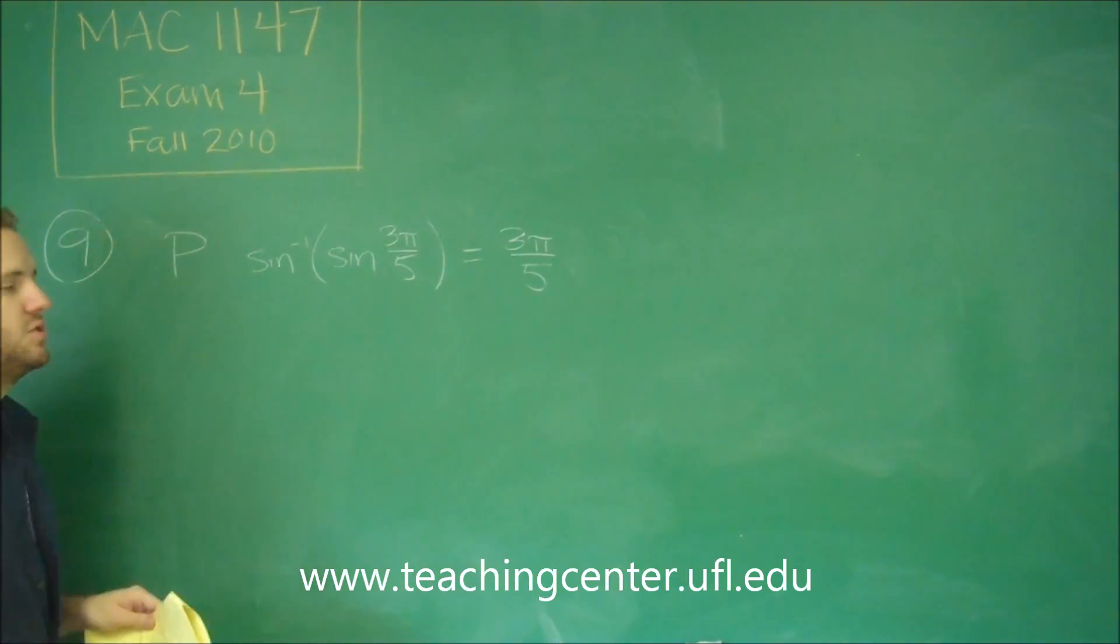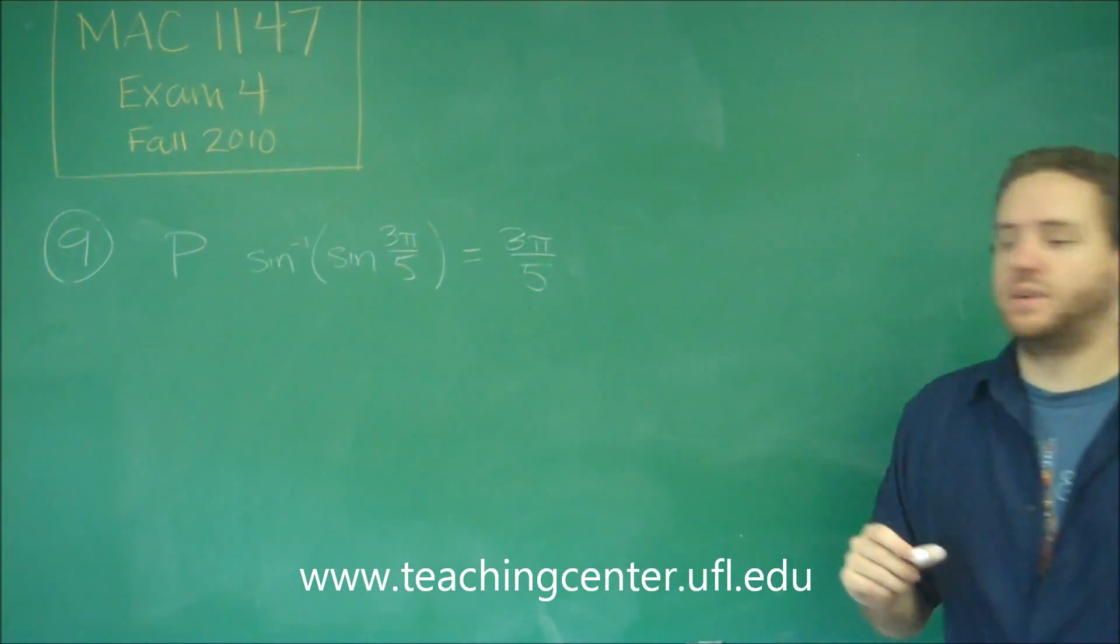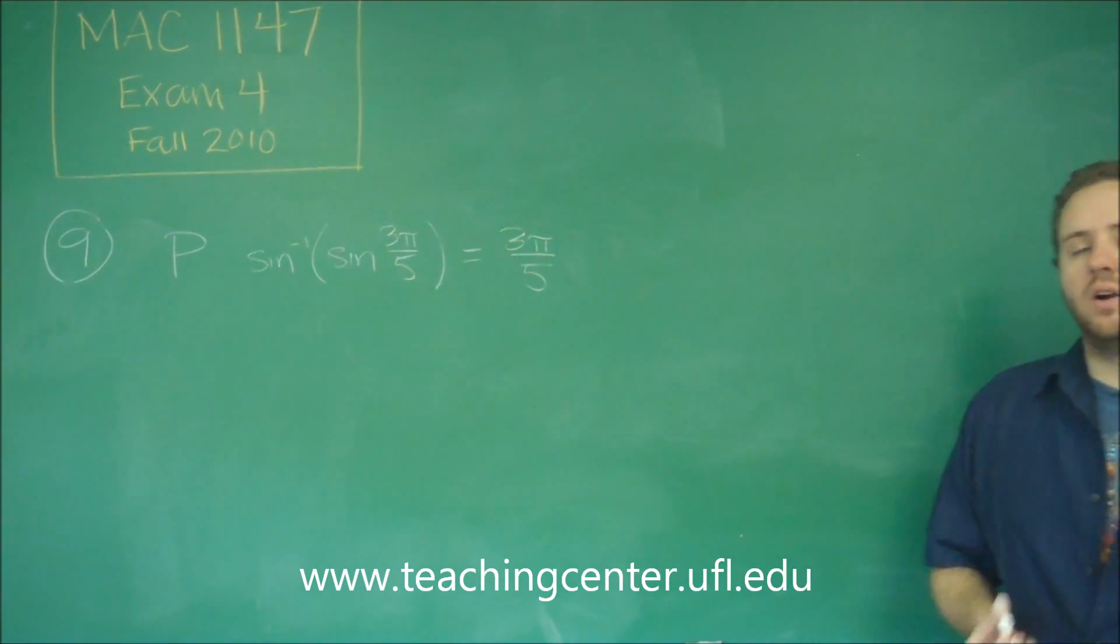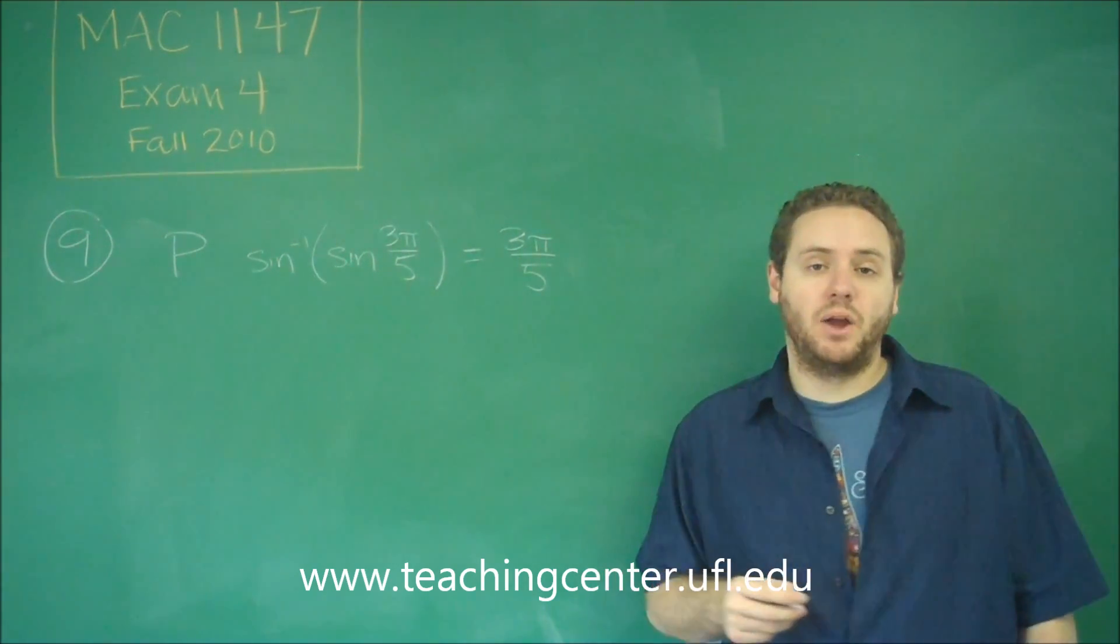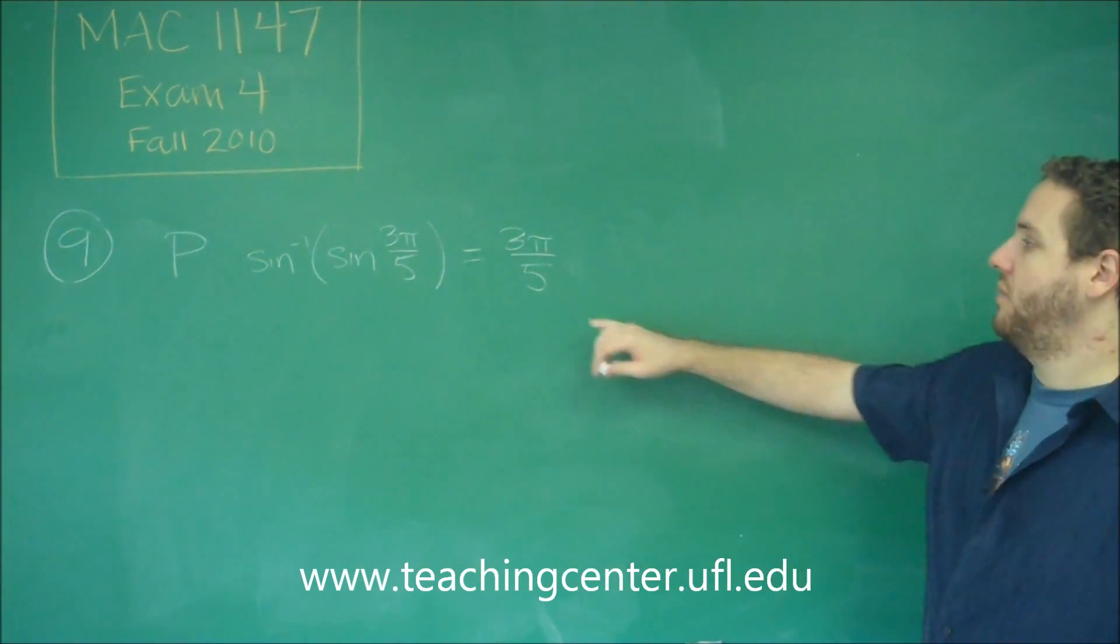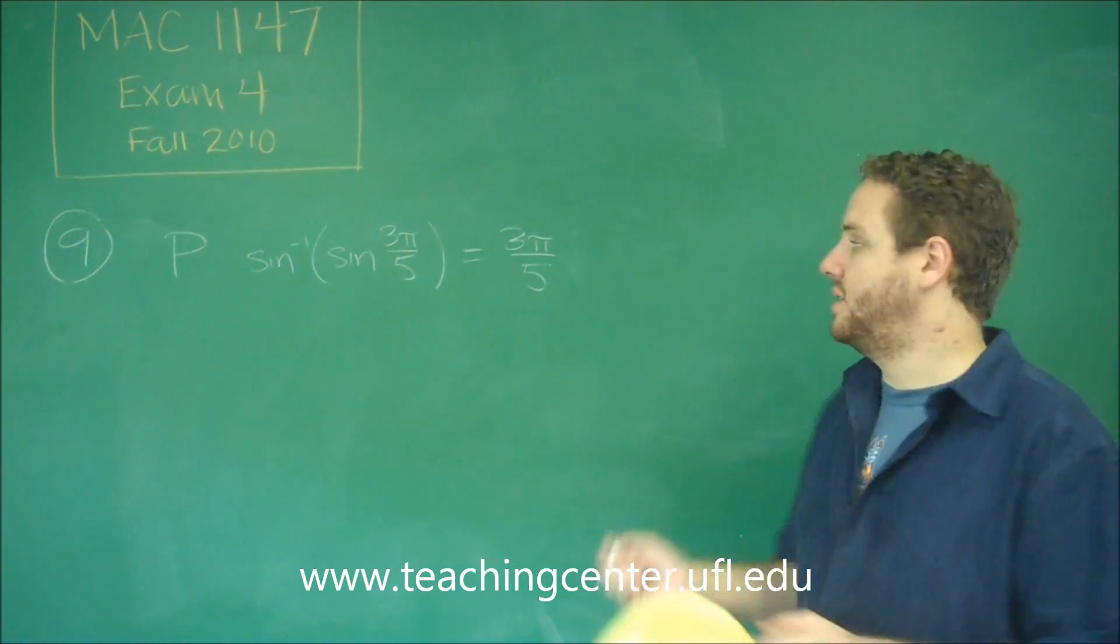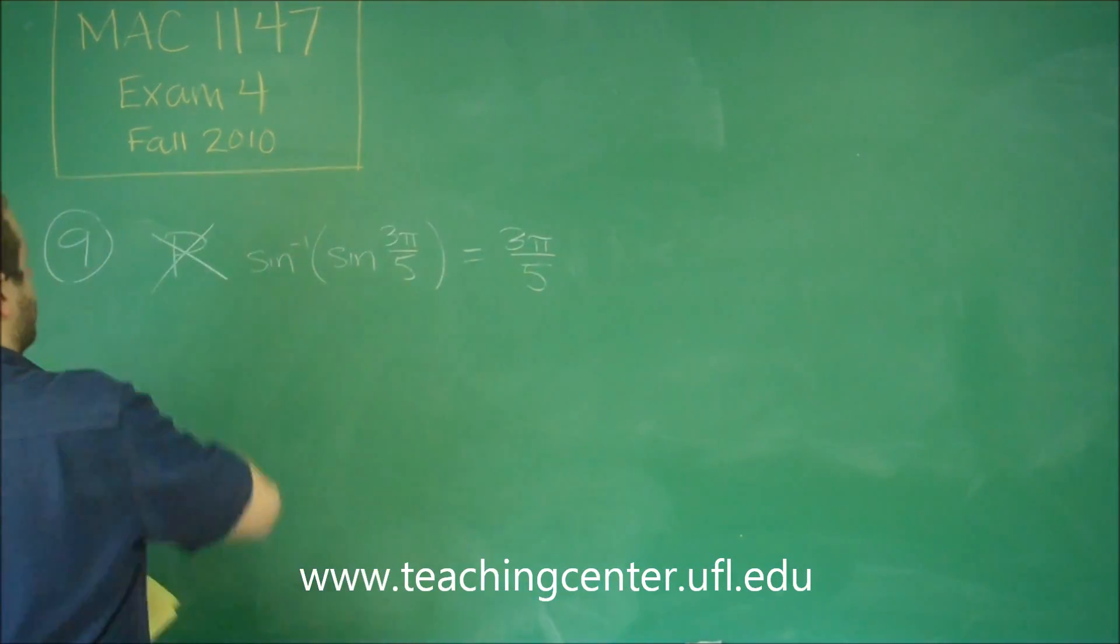So knowing whether this is true or false just boils down to whether you remember the rules for the inverse trig functions. Remember that the range of arc sine and arc tangent has to be from negative π over 2 to π over 2. 3π over 5 is outside the range of arc sine. The arc sine of anything could never be 3π over 5. So this one is false.